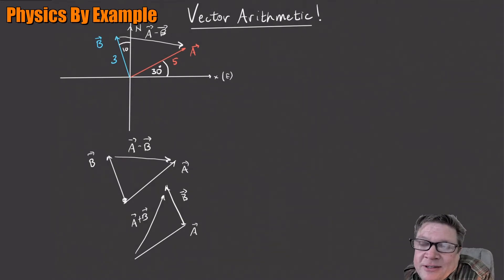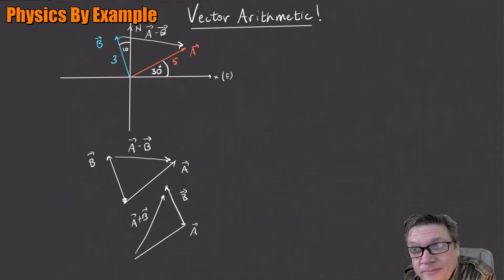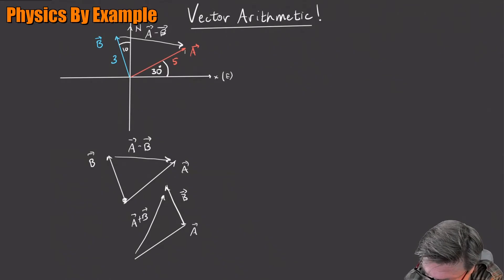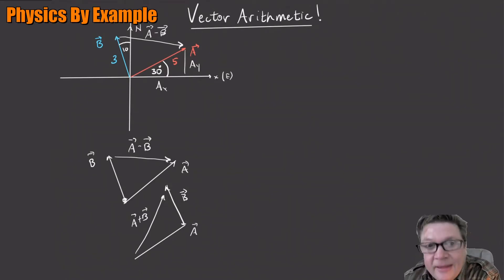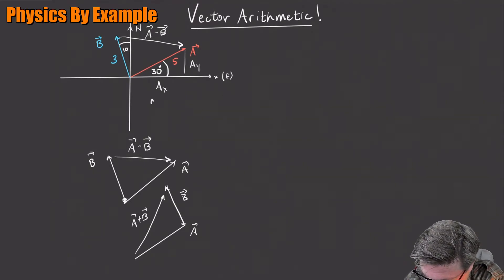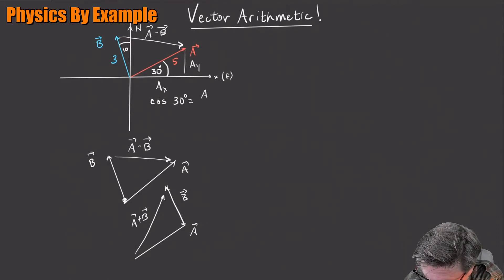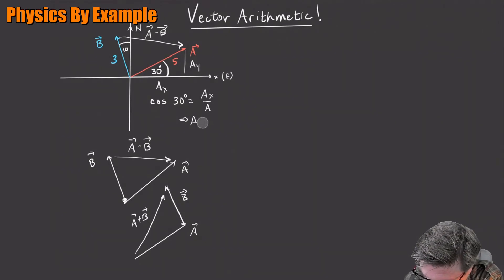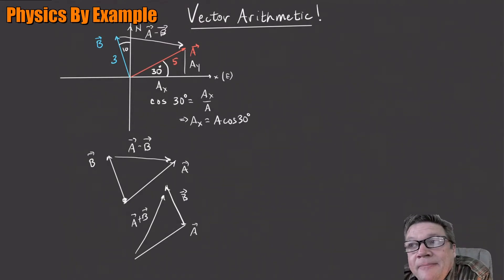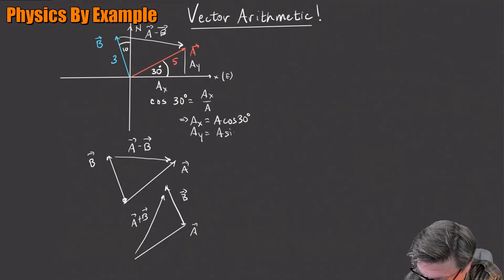Always, when you do this, you just want to get the components of the vector right off the bat — that's something you're always going to want to do. Vectors have these components: here is AY and AX. Looking at the diagram, cosine of that angle is the adjacent over the hypotenuse. The hypotenuse has length A of 5, so this is AX over A. That means AX is just A cosine 30, and similarly AY is A sine 30.